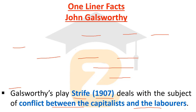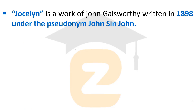Jocelyn is a work of John Galsworthy written in 1898 under the pseudonym John St. John. This novel was written in the early phase of his literary career.